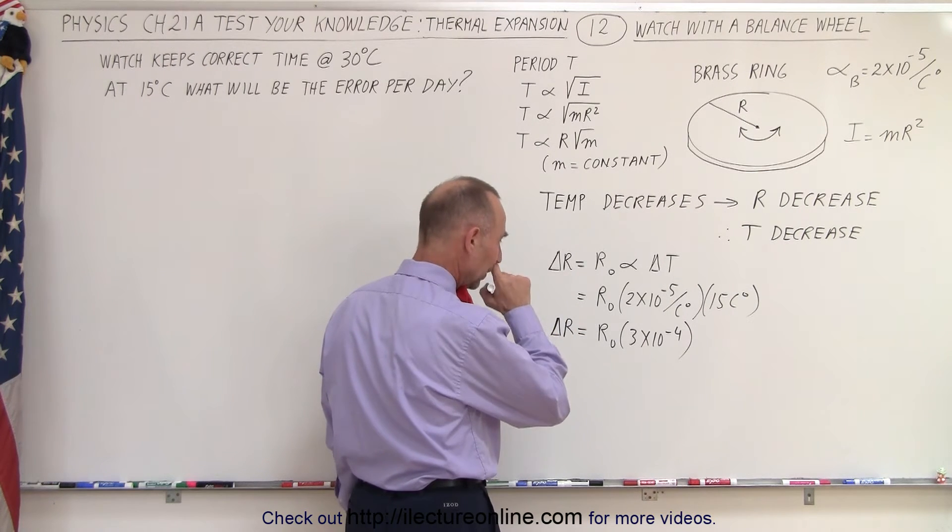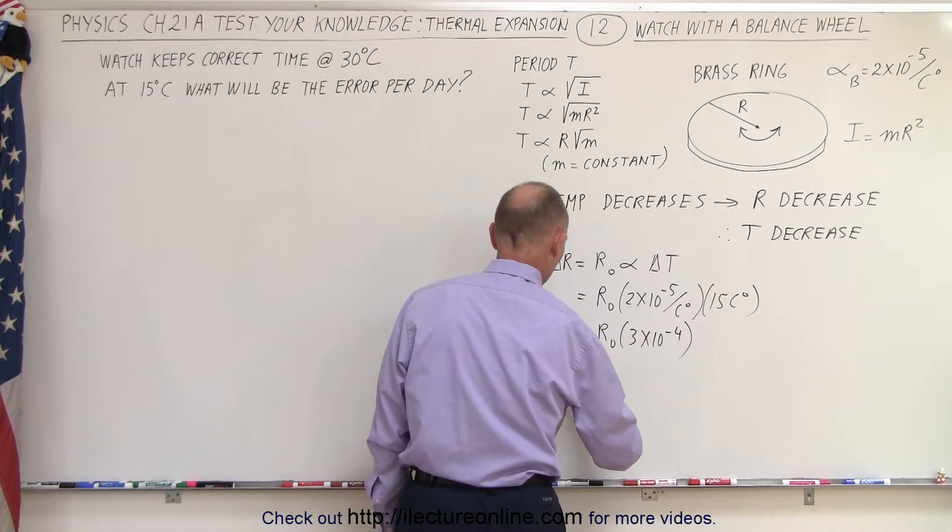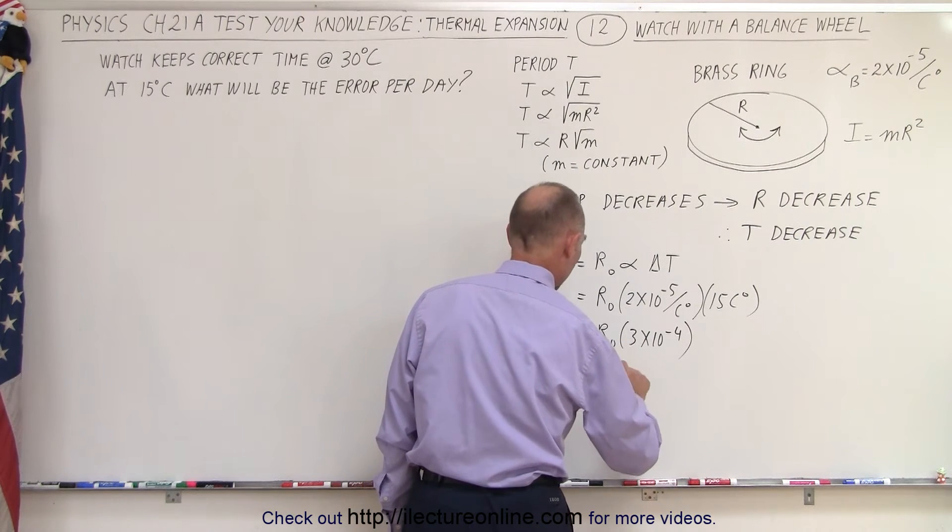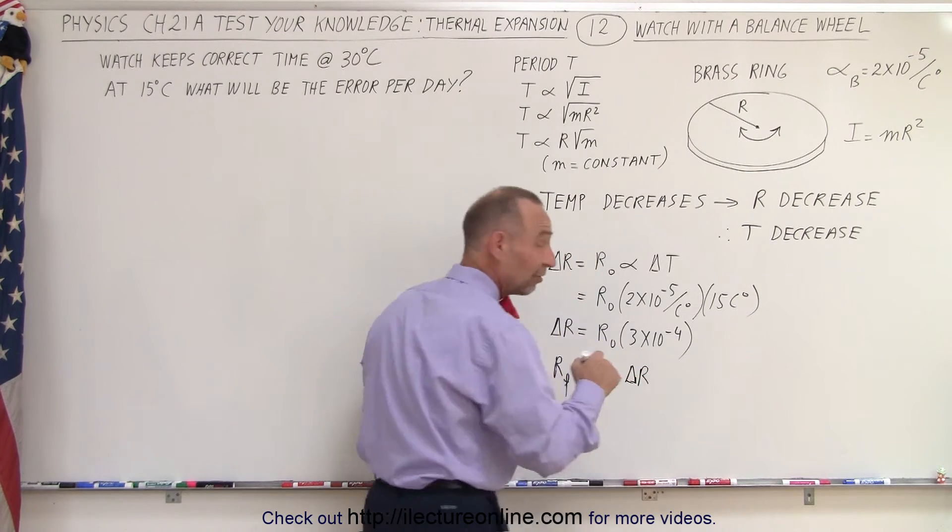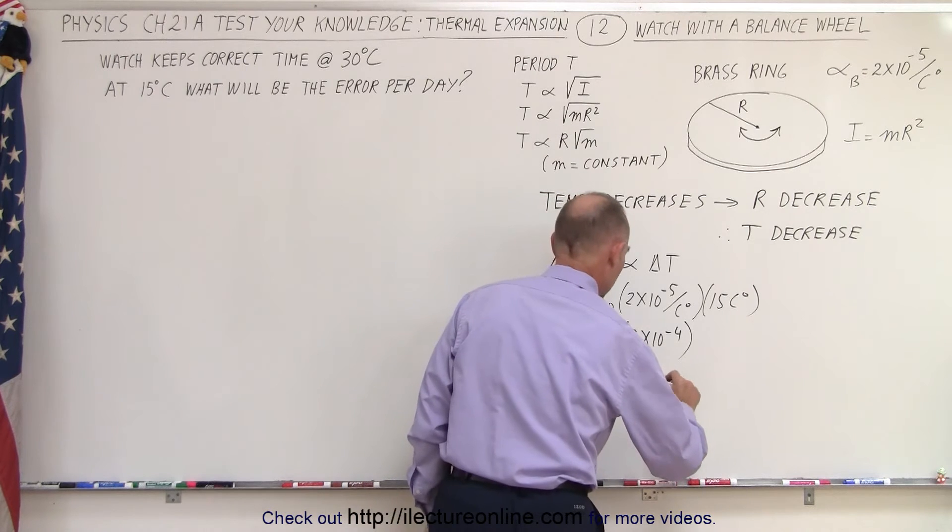And that means that the new radius, R final, will be equal to R initial minus the change, because the decrease in temperature means that the radius is going to shrink.